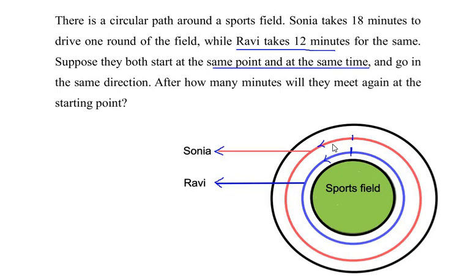So to find that out, we are going to find the lowest common multiple of the timings given for Sonia and Ravi. So let me start by finding the LCM or lowest common multiple of 12 and 18.